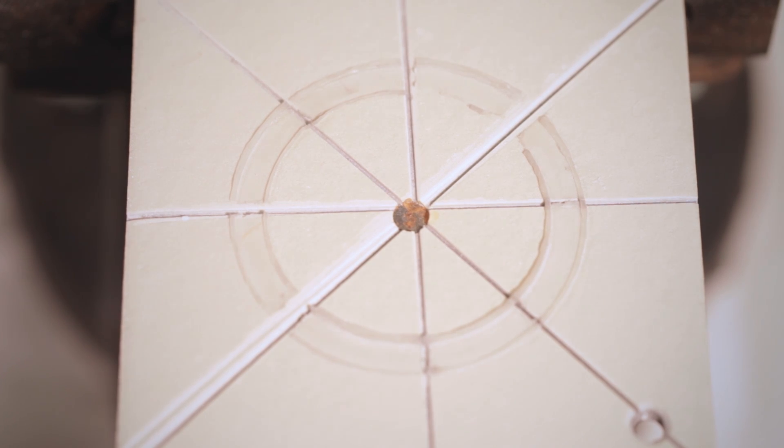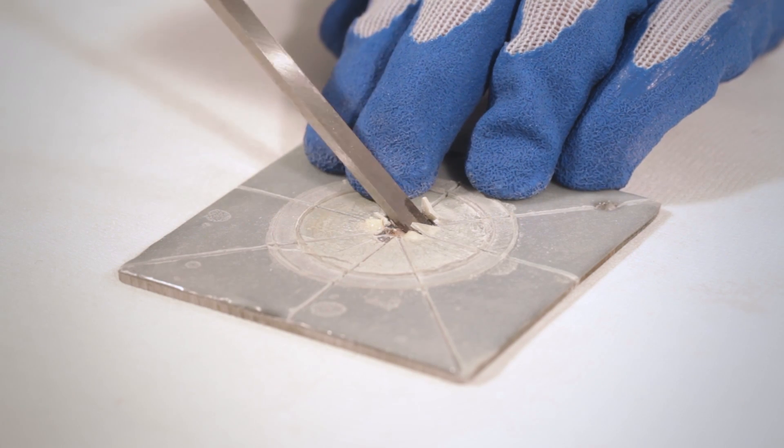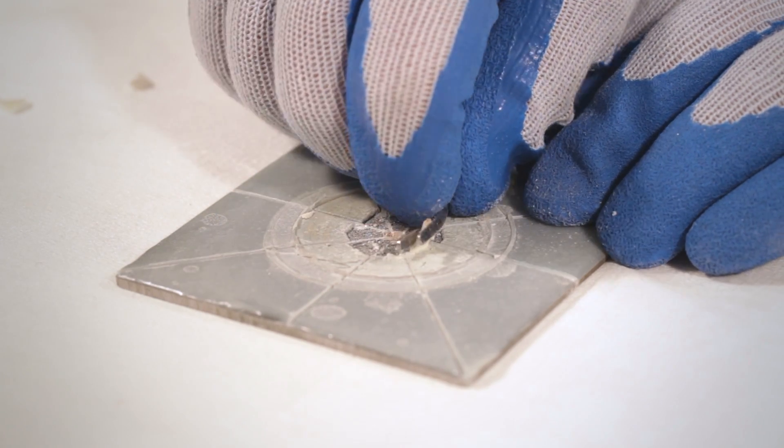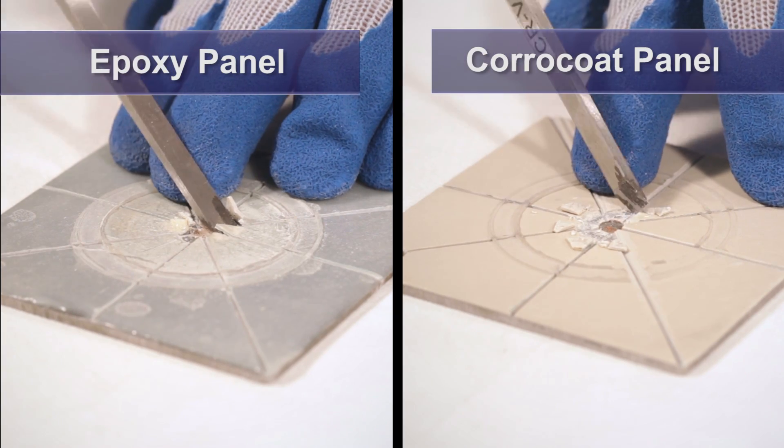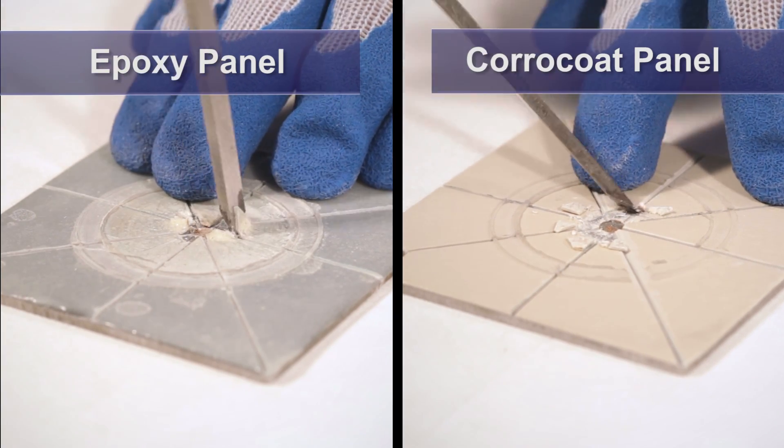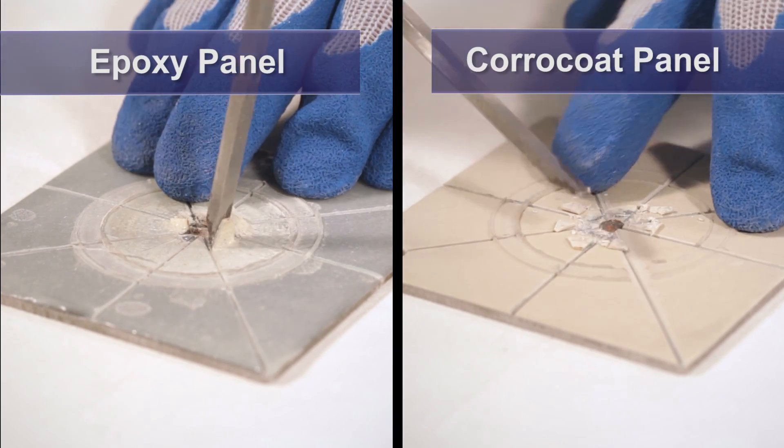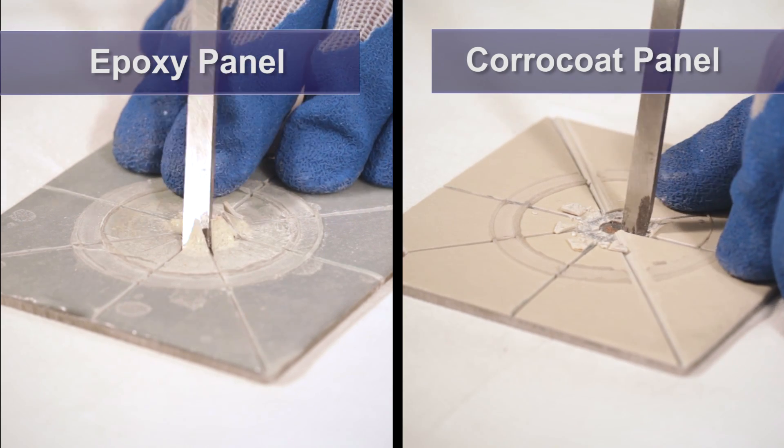A chisel is then inserted under the coating at the damaged site and used to gently prise upwards. The coating is broken away until a firmly adhered edge is encountered. In this comparison, the coating on the epoxy-coated panel can be easily removed with the chisel. The coating on the panel with the Coracoat glass flake coating is difficult to remove.